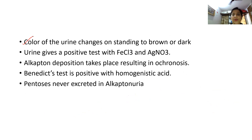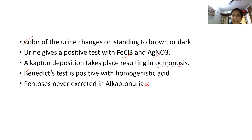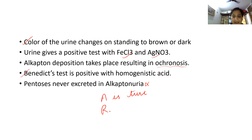The basic characteristics of alkaptonuria are: color of urine changes on standing to brown or dark; urine gives a positive test with ferric chloride and silver nitrate; alkapton deposition causes ochronosis. Importantly, Benedict's test is positive because homogentisic acid reacts with Benedict's reagent. Pentoses are never excreted. So the answer is: assertion is true but reason is false.